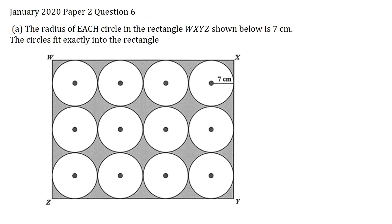I'll start by writing that the area of the rectangle is equal to length multiplied by breadth. I'll go to my diagram and notice that the length is equivalent to 4 diameters of the circle and the breadth is equivalent to 3 diameters of the circle.